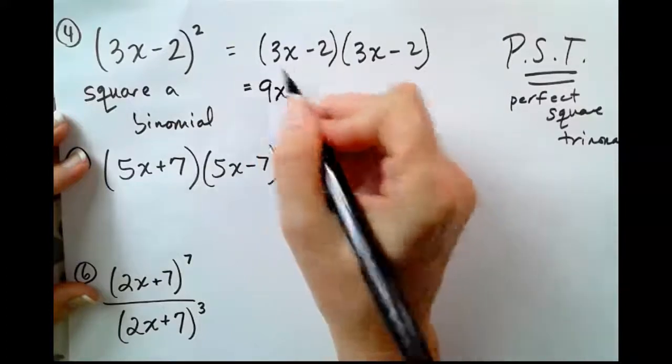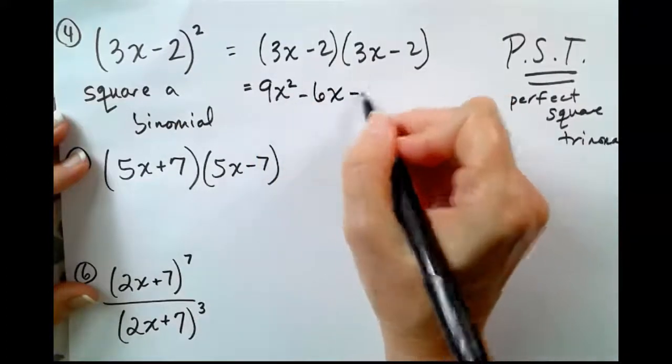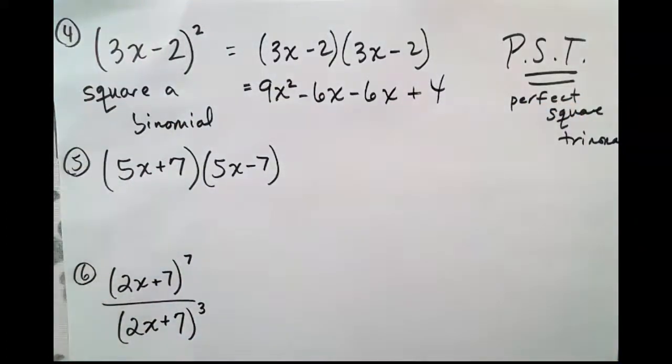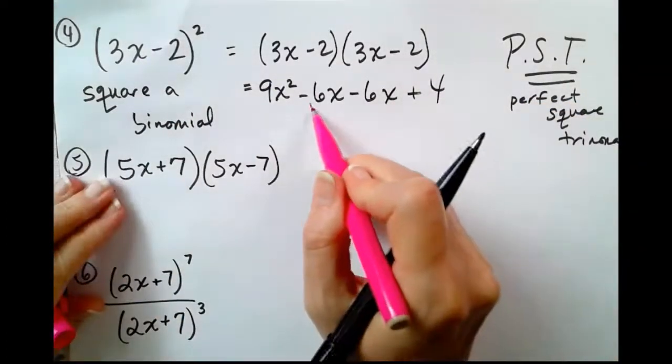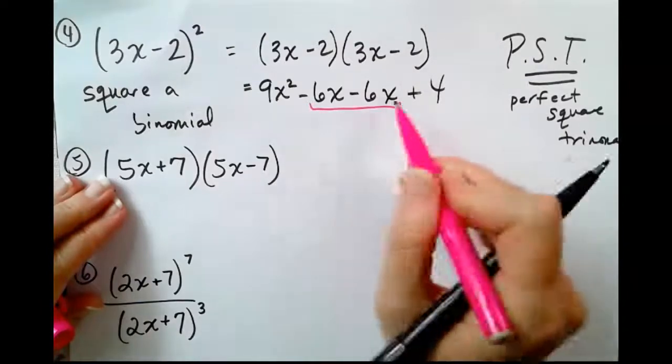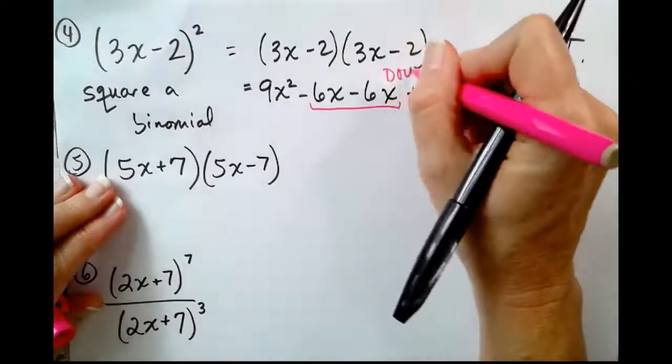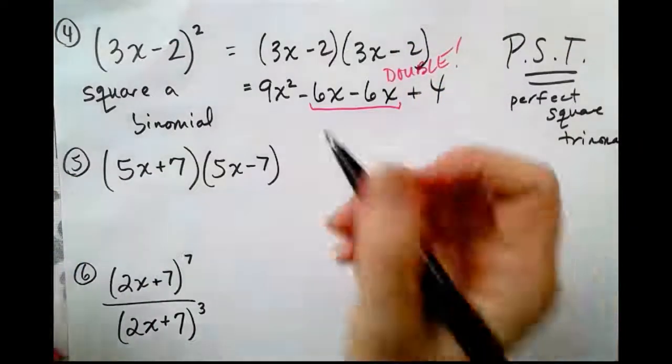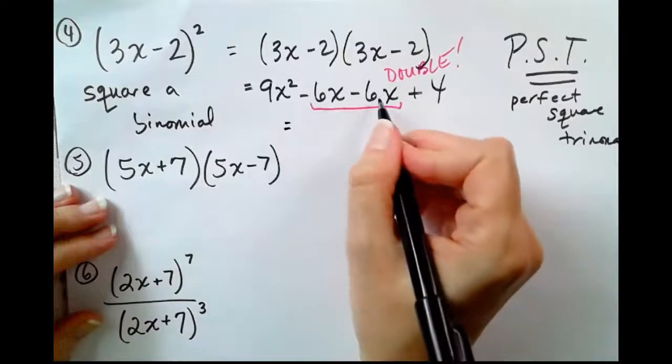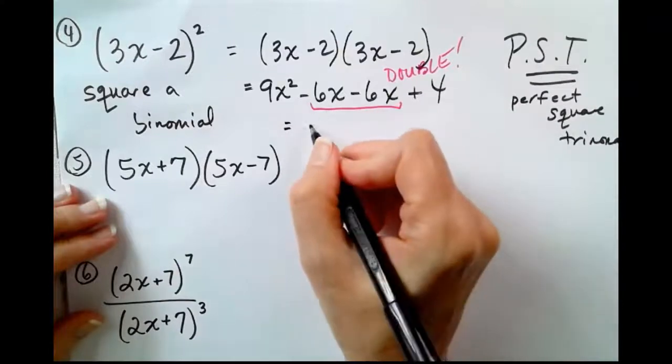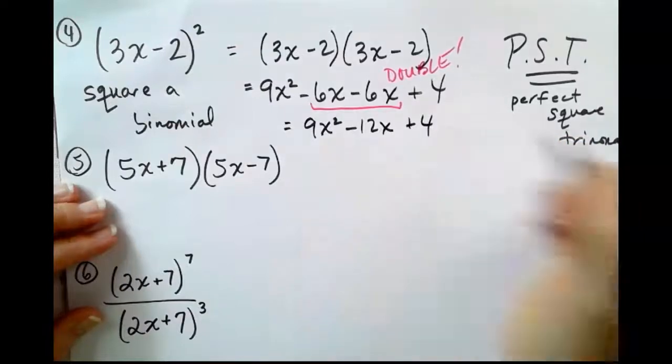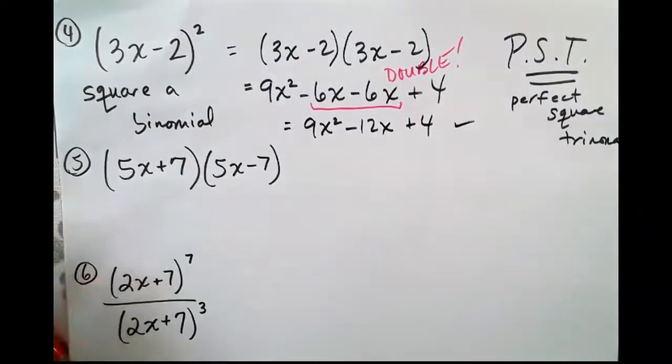First sides, outsides, insides, and last sides. And like we saw in the previous video, when we square a binomial, the middle terms don't cancel. They double. A negative 6 and a negative 6 gives us a negative 12. So, 9x squared minus 12x plus 4. That's our simplified answer.